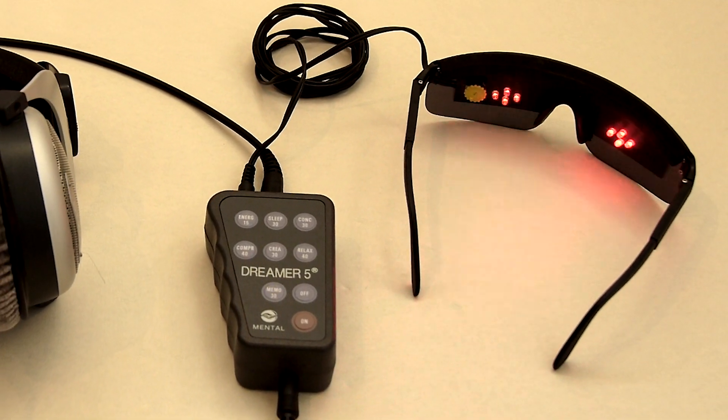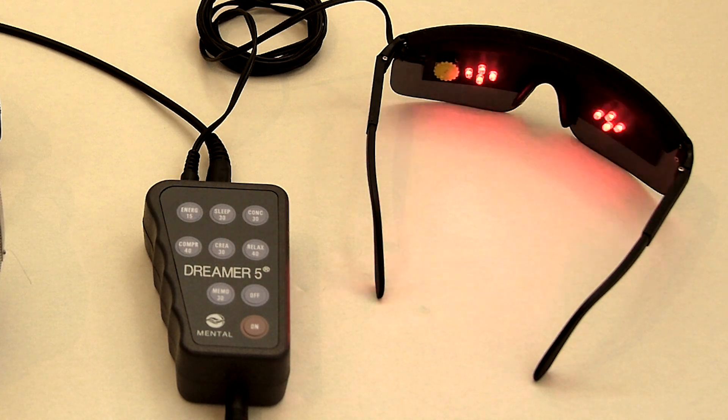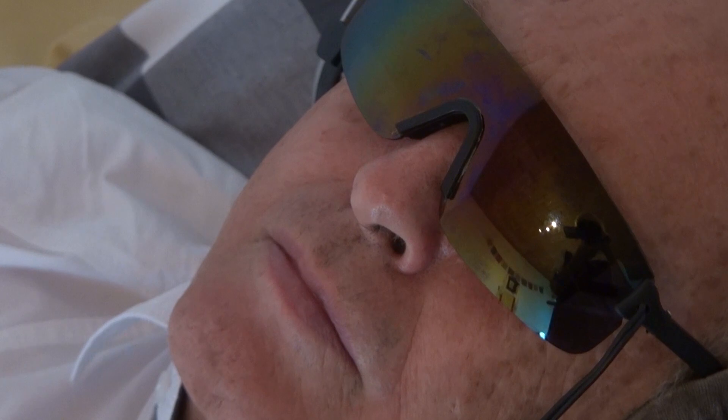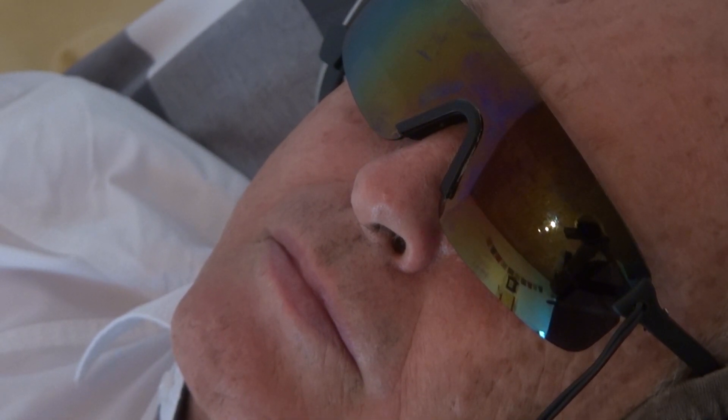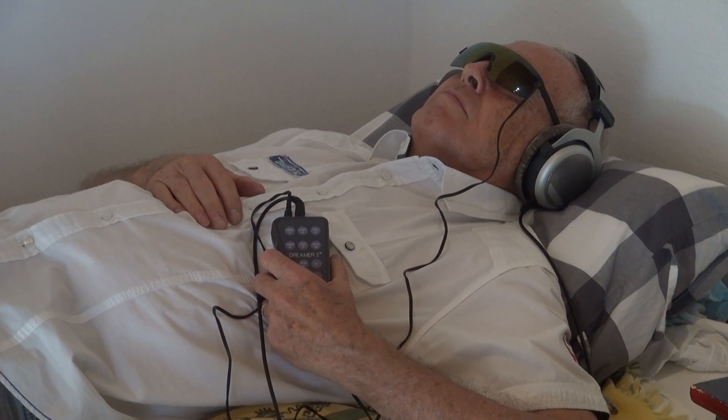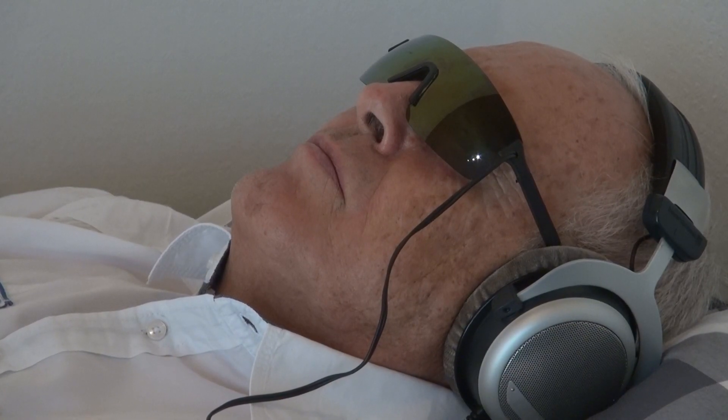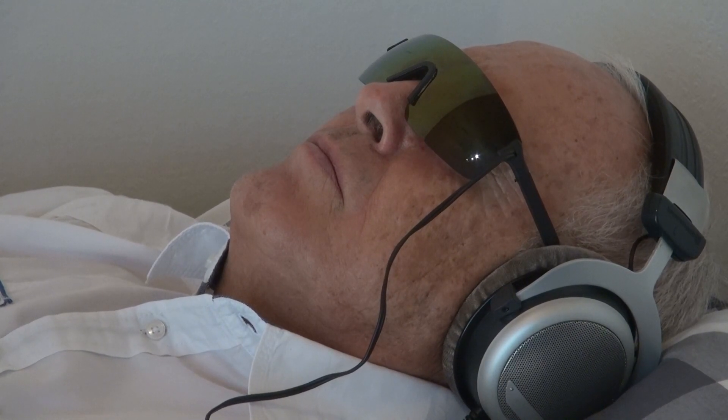The audiovisual stimulator consists of a pair of glasses equipped with LEDs that pulsate at specific frequencies. After a while, the brain will adjust to the slow pulsation frequency. In this way, the barrier between conscious and subconscious is lowered. As with neurofeedback, you can then listen to pre-recorded positive messages.